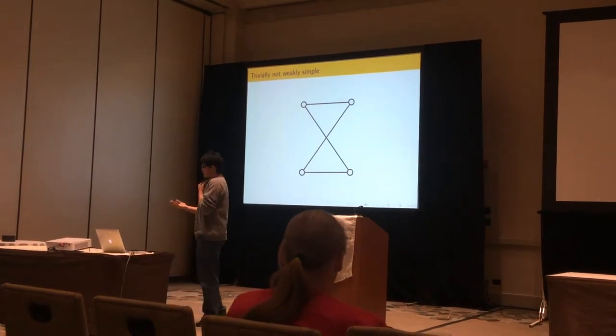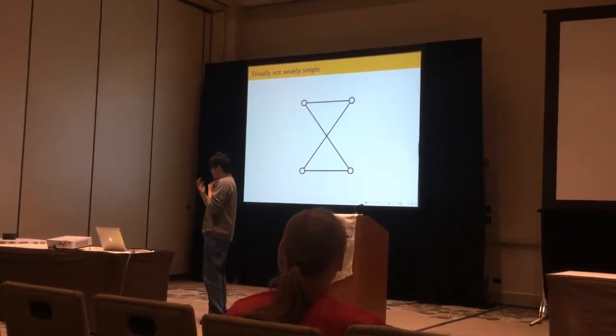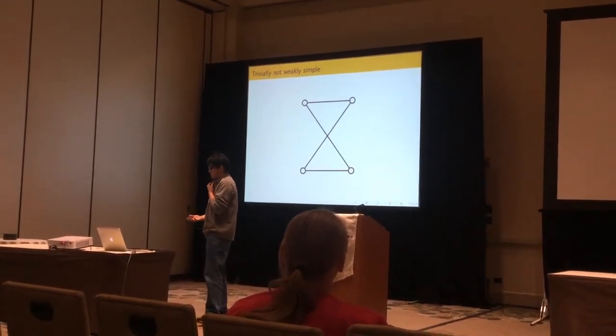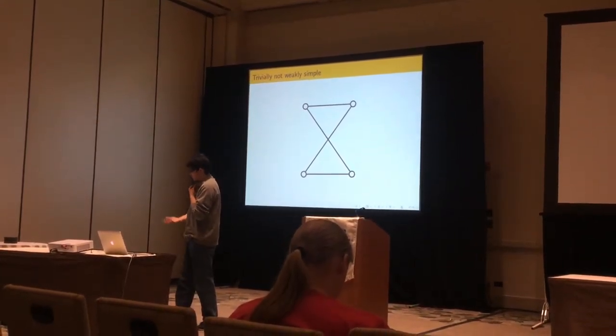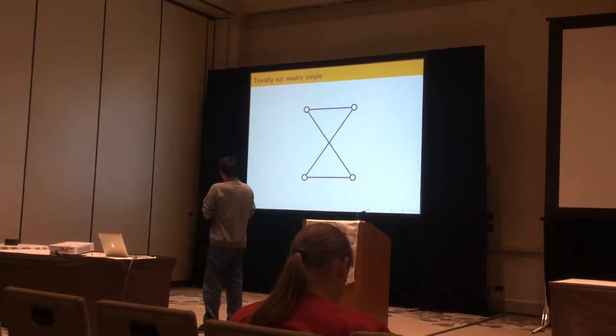So of course, this polygon is not a weakly simple polygon. If there's any crossing, then the polygons are not weakly simple polygons. So this is trivial, not weakly simple polygon because there's crossing between two edges.